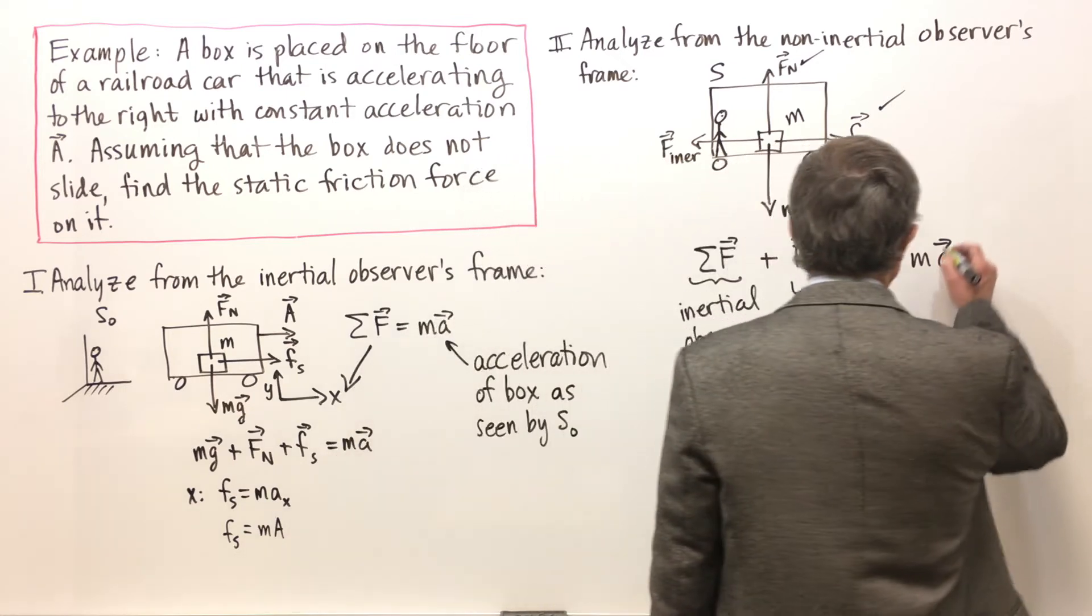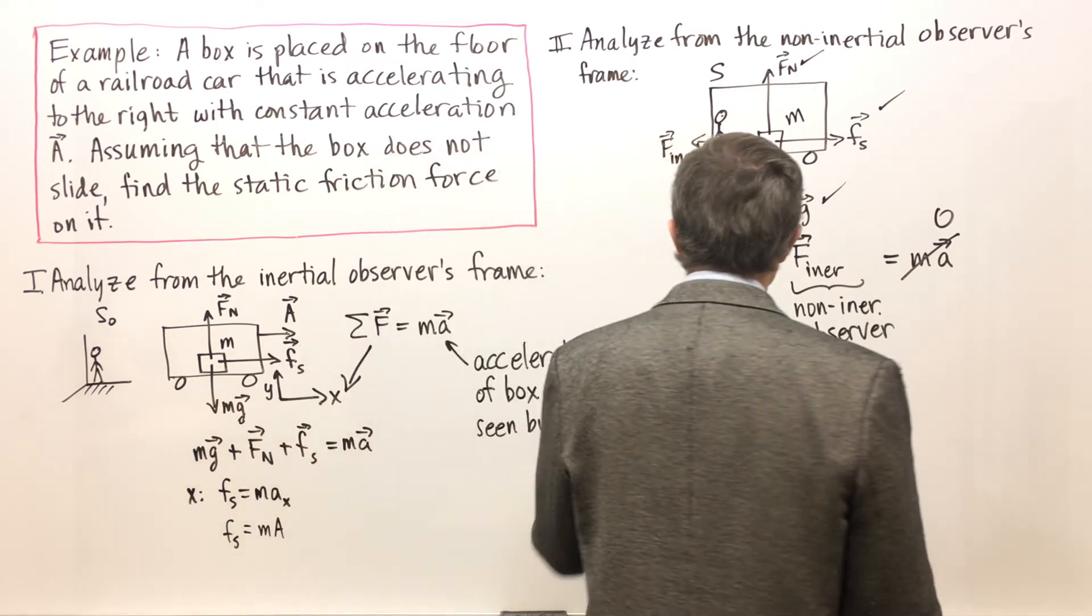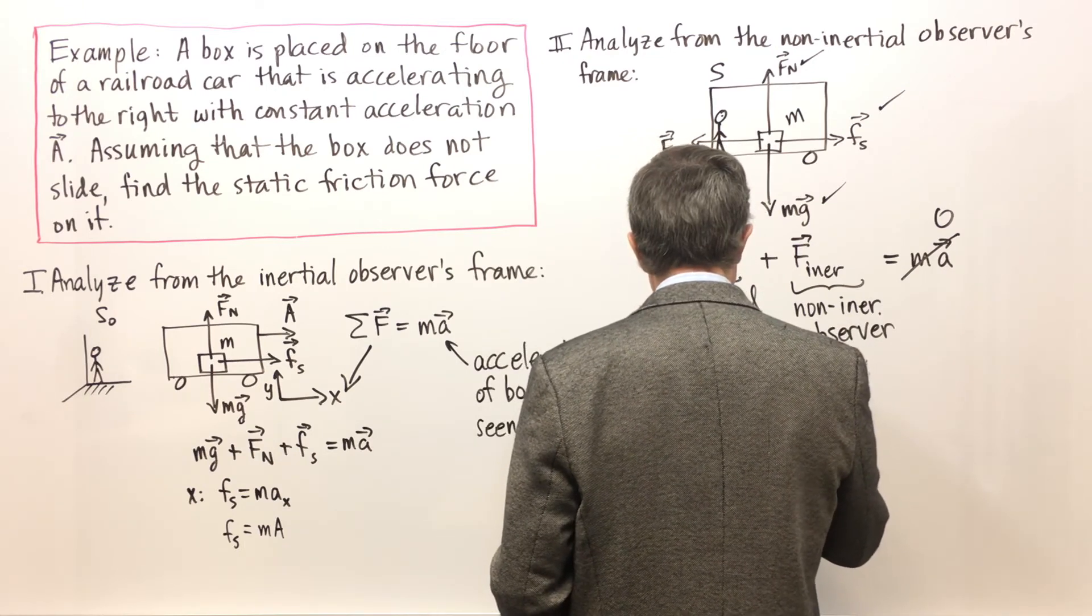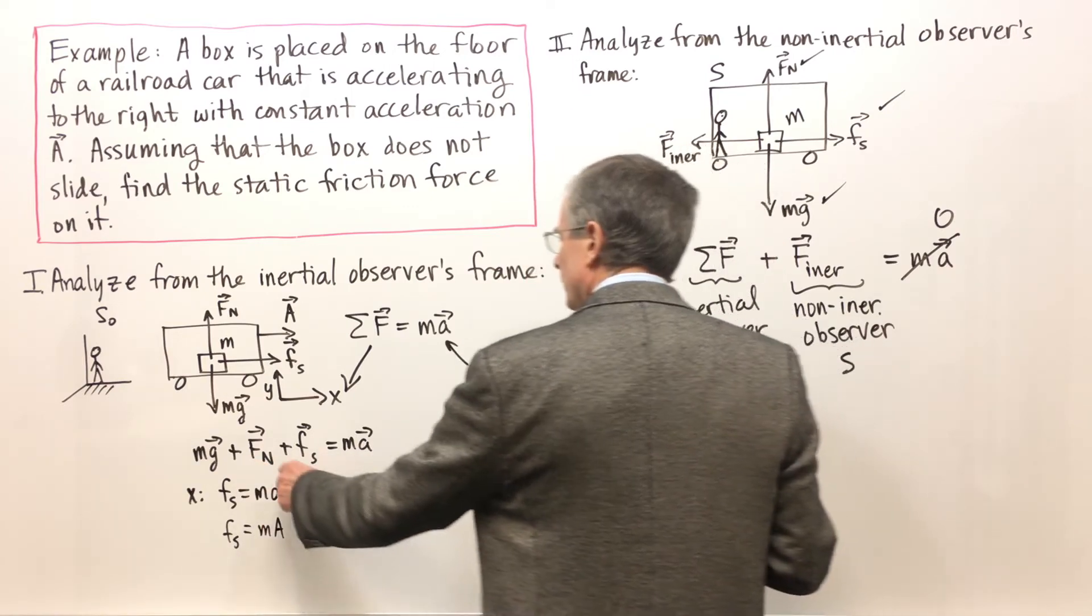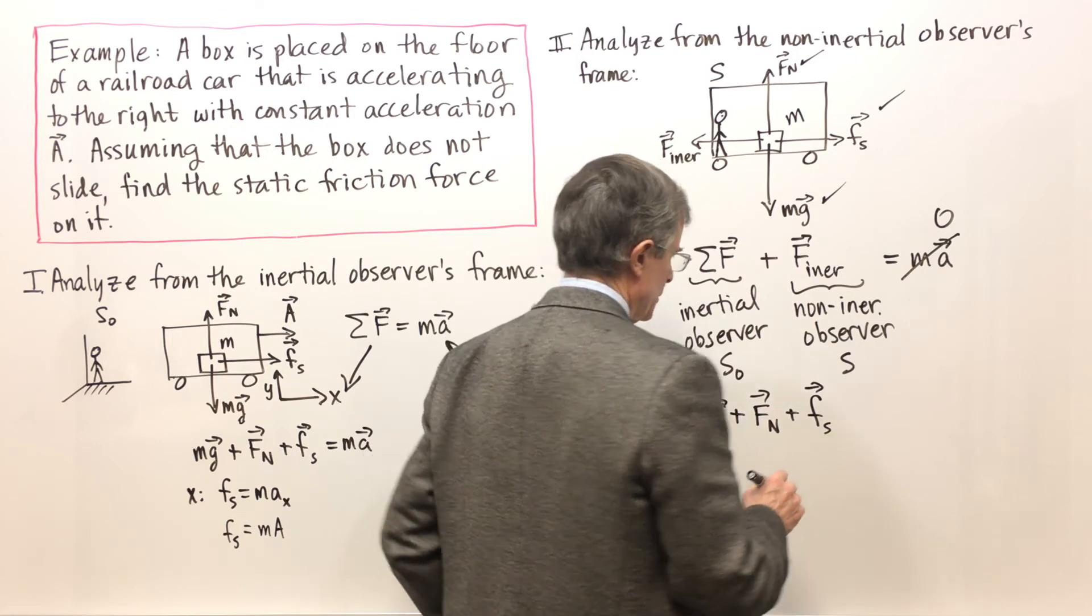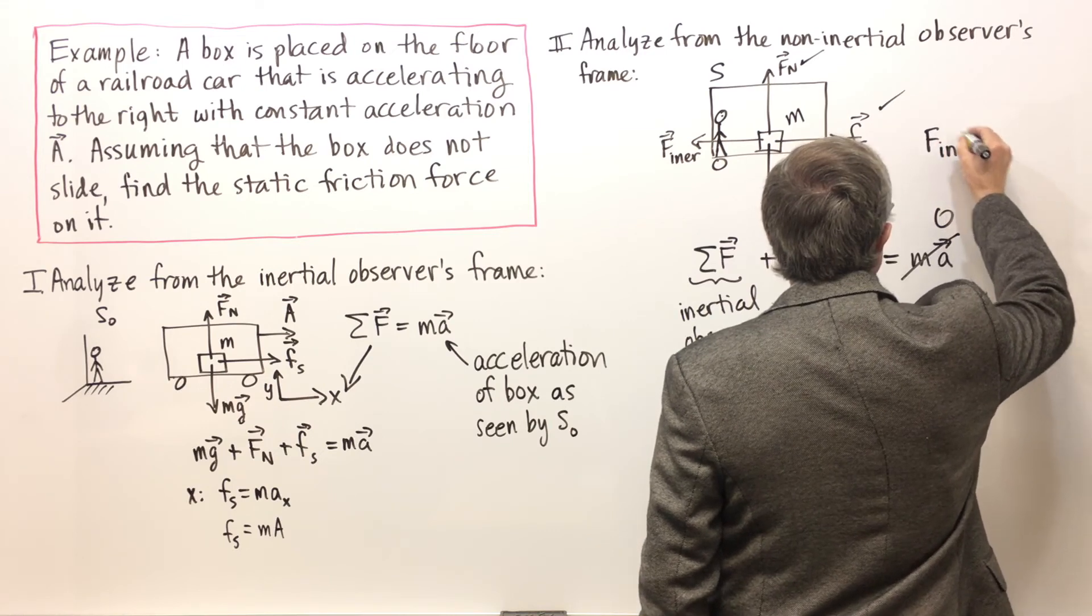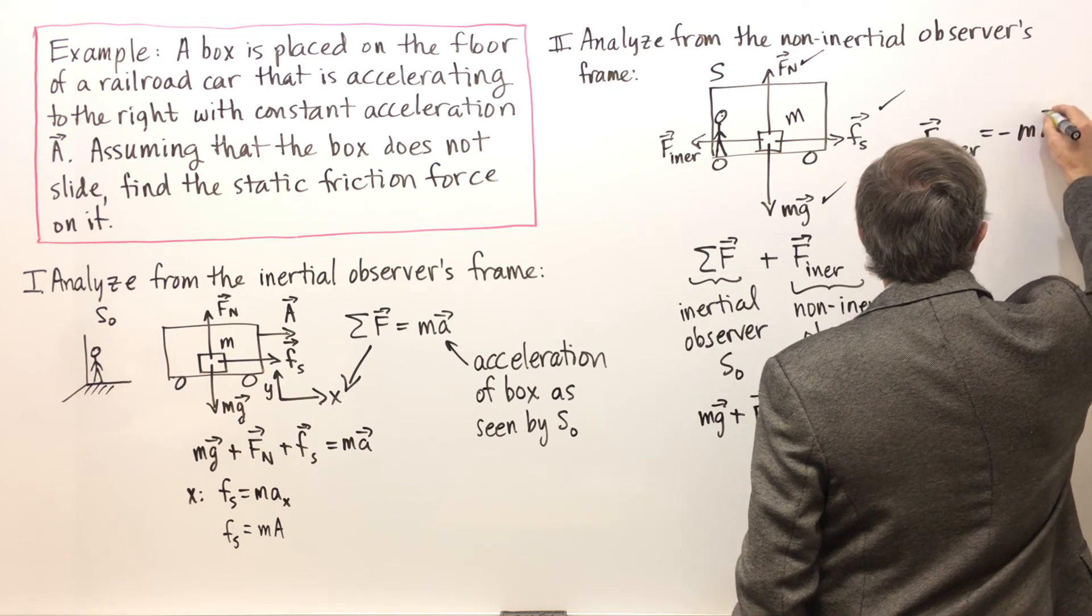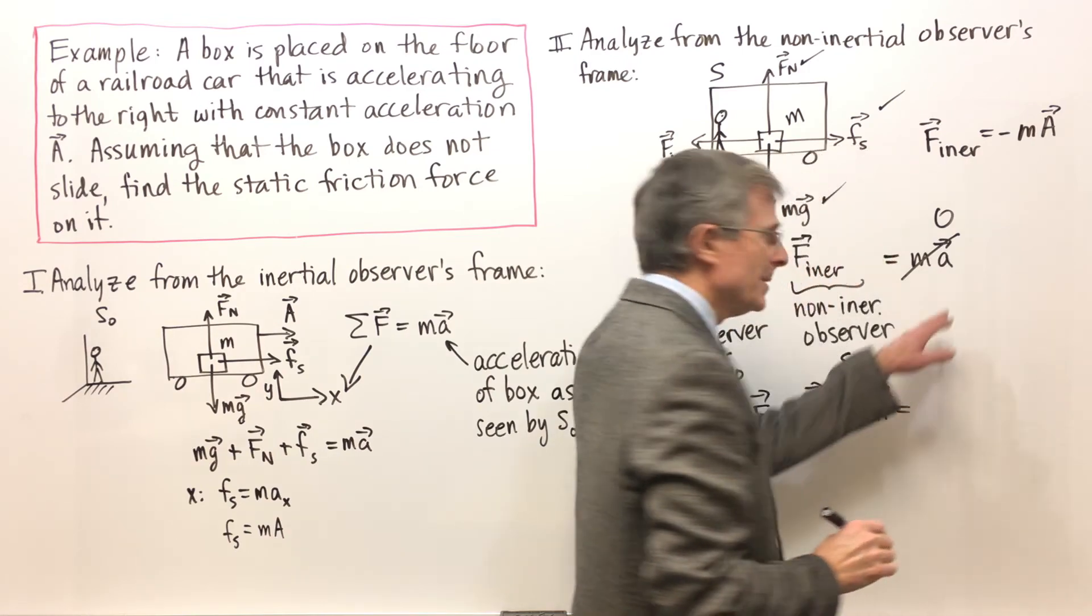And so he says, that's zero, there's no acceleration. And so then we end up with these three inertial observer forces. So Mg plus F_n plus F_s, the three forces the inertial observer sees, plus this force seen by the non-inertial observer. And what is that force? We worked it out in concept 9.2. It's minus M times the acceleration. And that's going to equal zero.